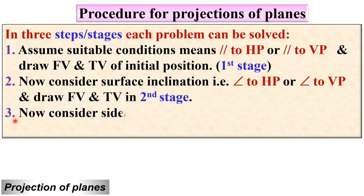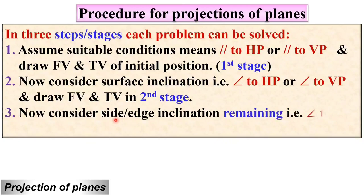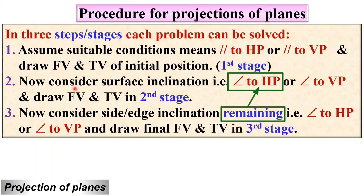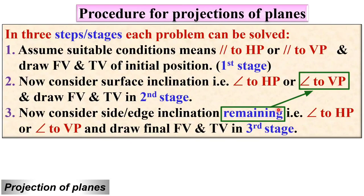In the third stage you have to consider the side or edge inclination that is remaining. That means if you assume in the second stage the plane is inclined to HP, then the remaining angle for the third stage is inclined to VP. If in the second stage the surface inclination is to VP, then in the third stage the remaining inclination is inclined to HP, and accordingly you draw the front view and top view.